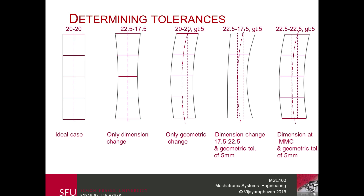What do the cylinders actually represent? The first is the ideal case: no geometric variation, completely straight, uniform cross section at 20 mm. The second has no geometric variation — perfectly straight — but has dimensional change. The third has the ideal dimension throughout but a geometric tolerance, meaning the axis is bent slightly. The fourth has dimensional variation of 17.5 to 22.5 and a geometric tolerance of 5 mm. The fifth has every cross section at the maximum allowable size, plus a geometric tolerance.